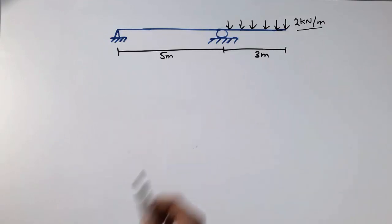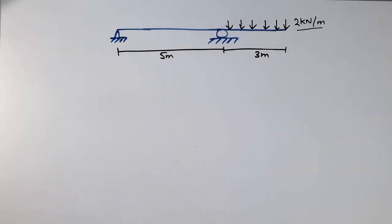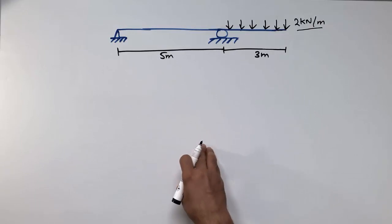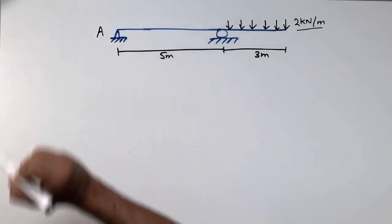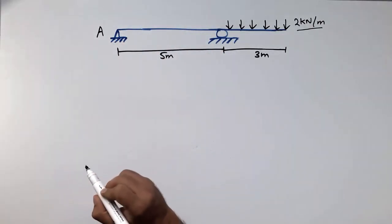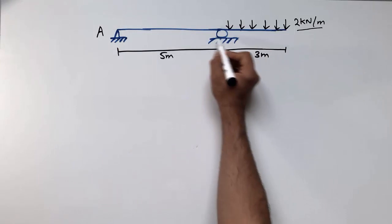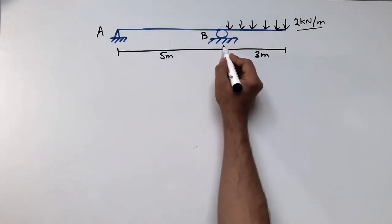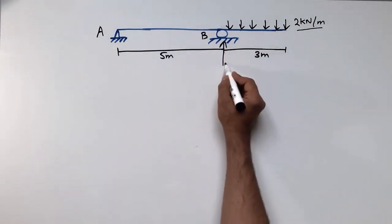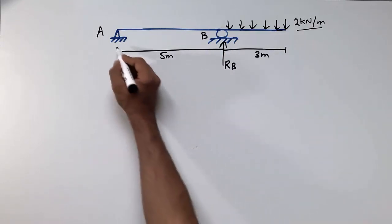We want to draw the shear force and bending moment diagram for this beam. To start, we first have to find the support reactions. Let's label the left support as point A and the right support as point B, assuming both reactions RA and RB act upward.